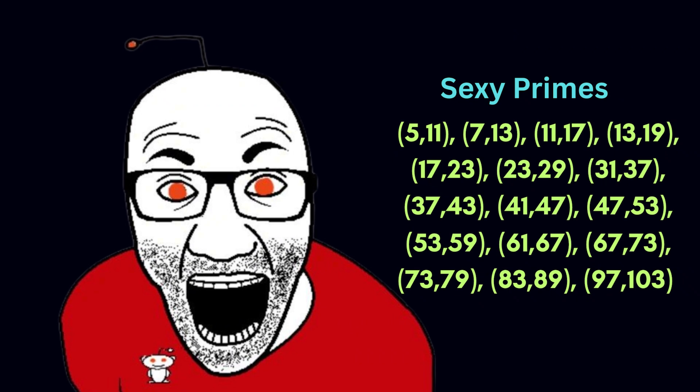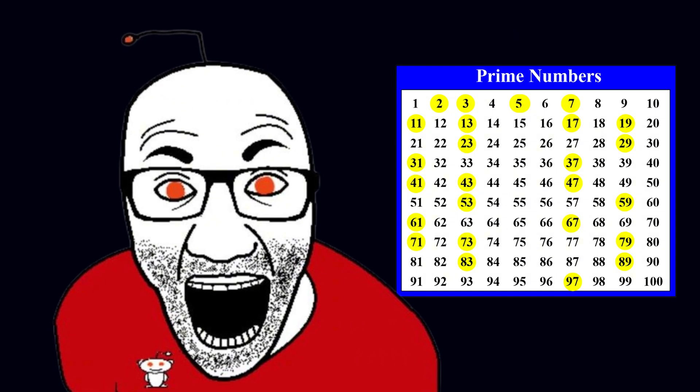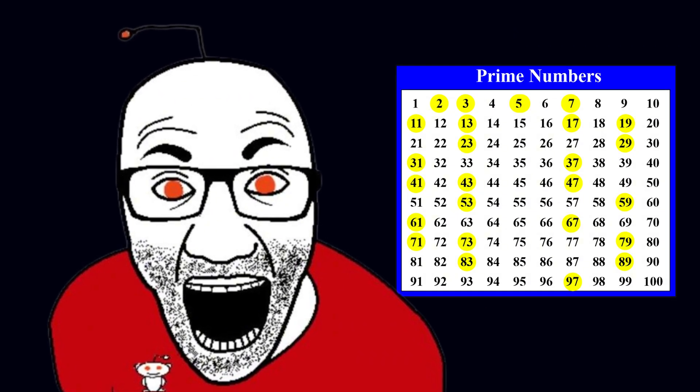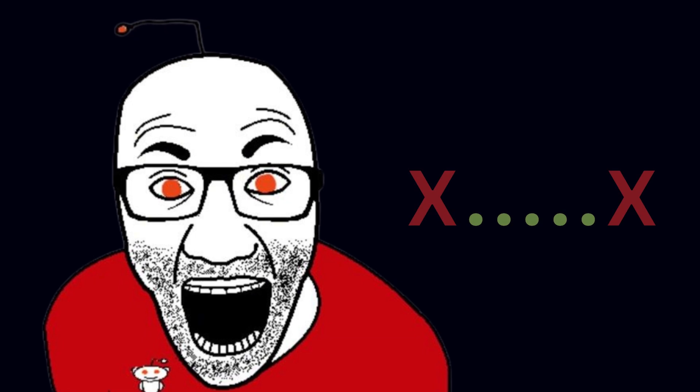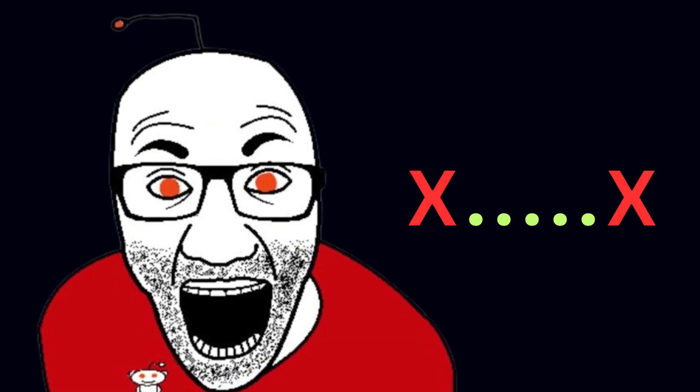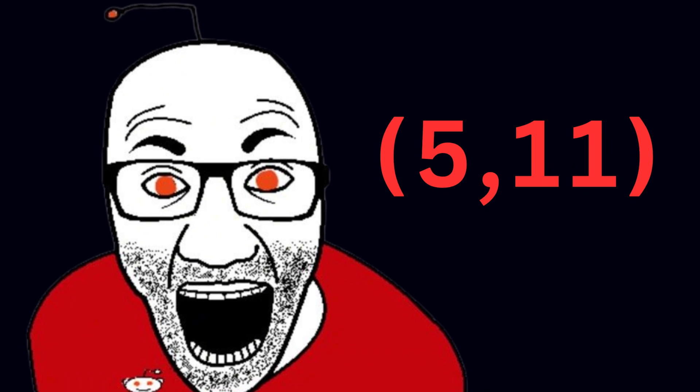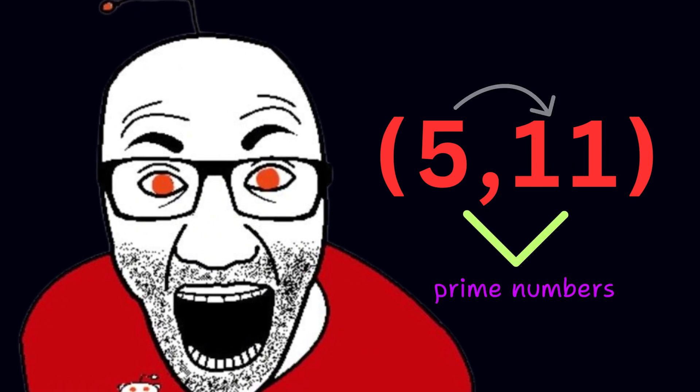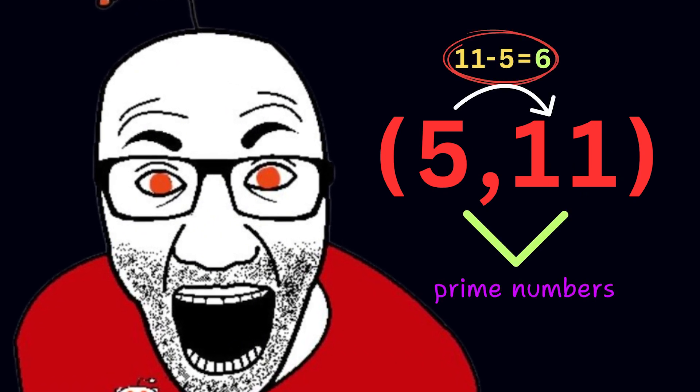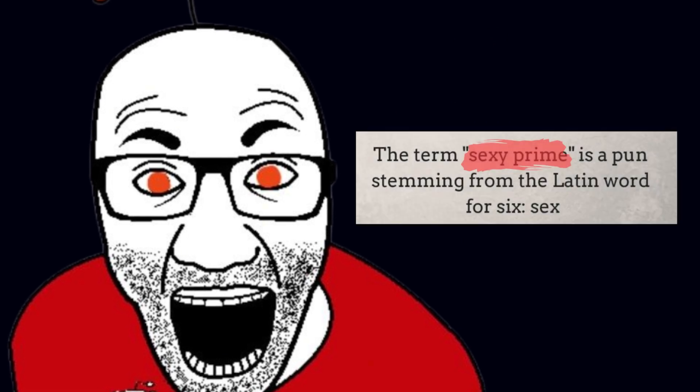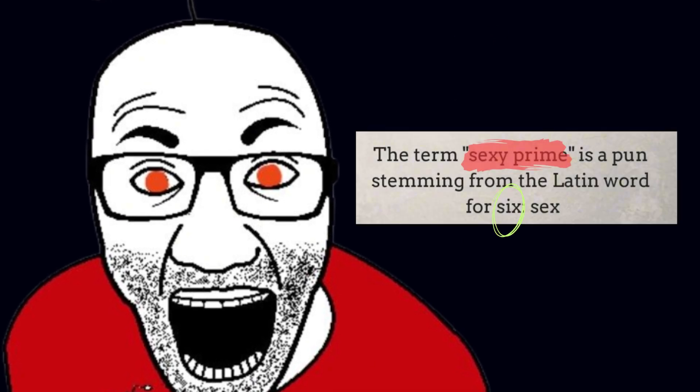Sexy primes are prime numbers that differ from each other by 6. A prime is a number that is not divisible by any positive number except one and itself. Sexy primes are prime numbers that differ from each other by 6. For example the numbers 5 and 11 are a pair of sexy primes. Because both are prime and have a difference of 6. 11 minus 5 equals 6. The term sexy prime is a pun stemming from the Latin word for 6 which is sex.